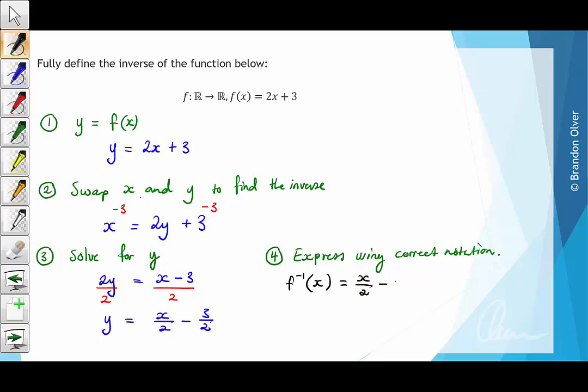Here we replace the y with f inverse of x and state the rule we just found, which is x over 2 minus 3 over 2. Then we need to write the domain, which is for x is an element of the real number set.